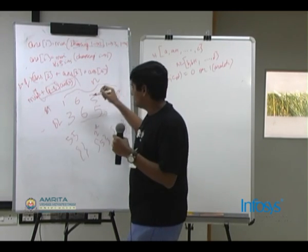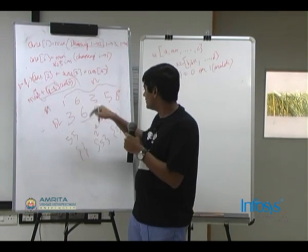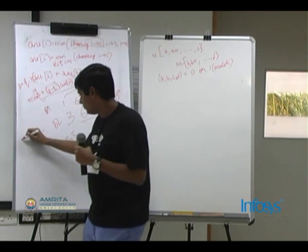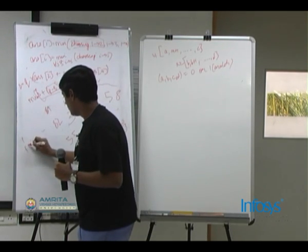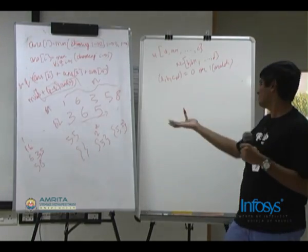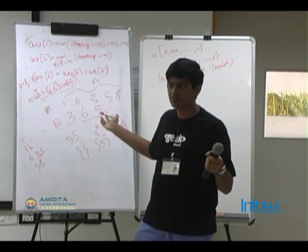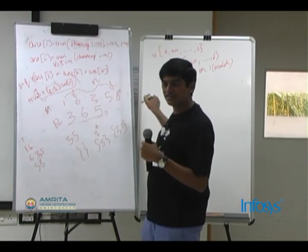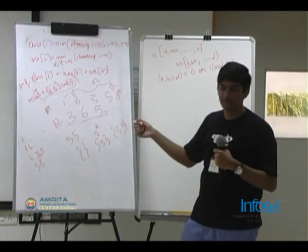Actually, let me restate the problem — the problem is not about all possible subsequences but about subwords, meaning you can take only contiguous elements. For 1, 6, 3, 5, 8, the subwords are contiguous segments. How many subwords are there for an array of length n? You choose any two indexes, and all numbers between them form a subword, so there are n choose 2 possible subwords.